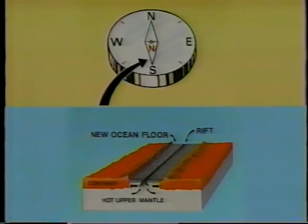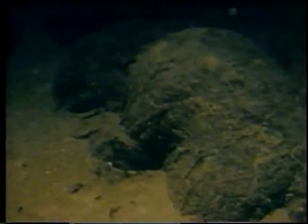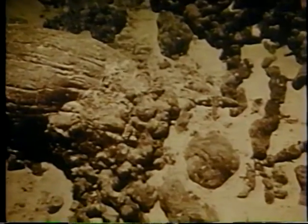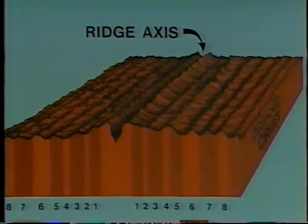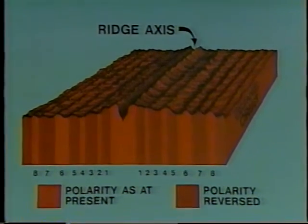Two British scientists, Vine and Matthews, suggested that reversals of the Earth's magnetic field could provide evidence to support the theory of seafloor spreading. They predicted that igneous rocks, such as those which make up the ocean floor, should contain a record of the Earth's magnetic reversals. Since the rock spreads about equally in both directions from the rift, they reasoned there should be a pattern of alternating positive and negative magnetic anomalies on each side of the ridge axis. Each band represents an upwelling of lava that cooled and was moved aside to make room for later eruptions. A large amount of magnetic data in the rift region was obtained to see if the predicted pattern of magnetic anomalies existed.